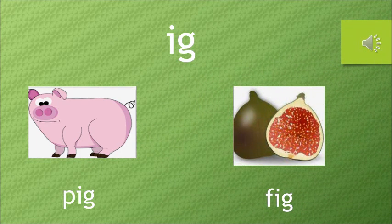So the next I word we are going to do is IG. The sound of I is E, sound of G is G. And the words are PIG and FIG. PIG is a type of an animal and FIG is a type of a fruit.